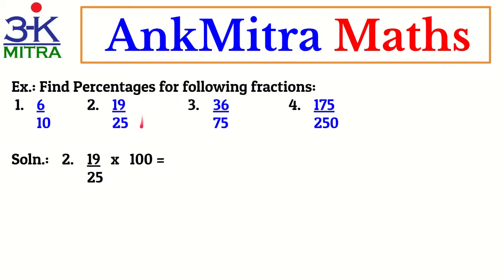Now the second example: the fraction is 19/25. The first step is the same — 19/25 multiplied by 100. How do we reduce this? If we know the table of 25: 25, 50, 75, 100 — so 100 is a multiple of 25 and it is 4 times 25. So we can cancel this 25 with this 100 — the 25 reduces to 1 whereas the 100 reduces to 4.